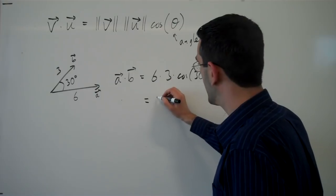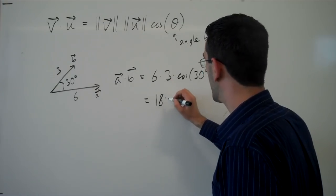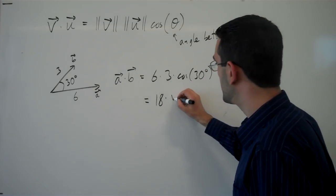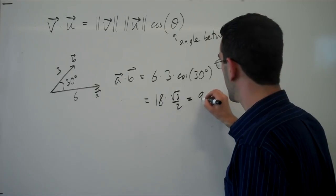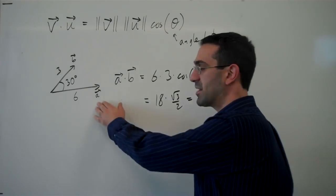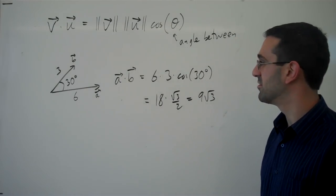So we'd have 18 times cosine of 30, which is square root of 3 over 2, giving us 9 root 3 as the dot product of these vectors.